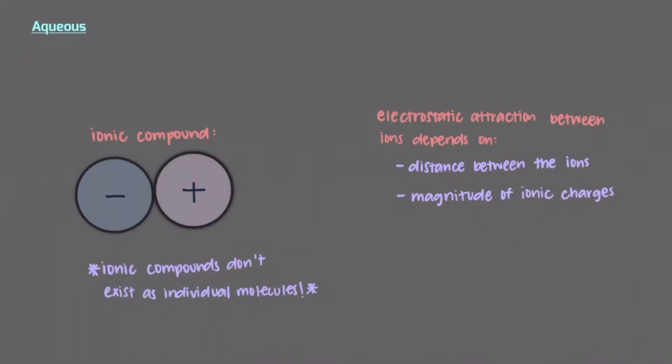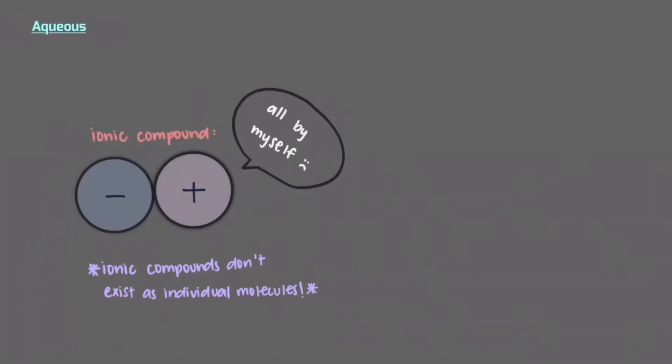However, ionic compounds don't exist as individual molecules. In other words, it's very rare to see a sodium chloride molecule by itself.